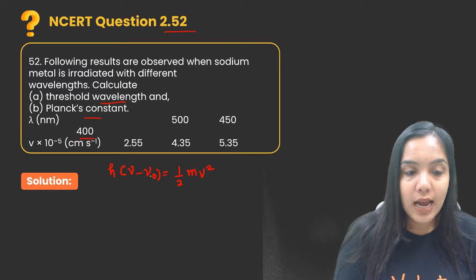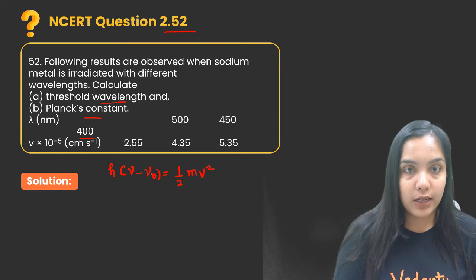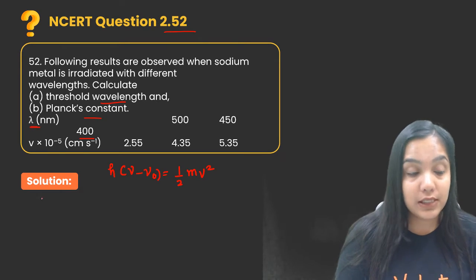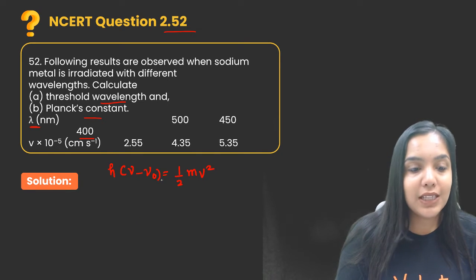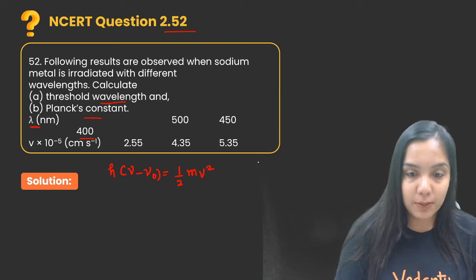In order to do that we have to change this expression in terms of lambda. So we know that h nu is equal to hc upon lambda. We have done this already, okay, this expression.